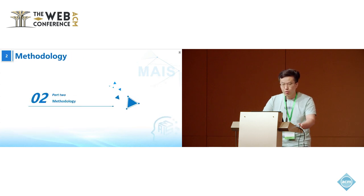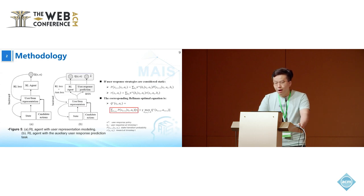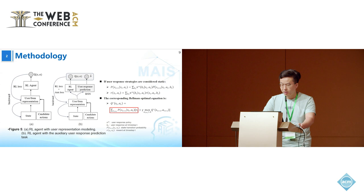Figure 5 illustrates two traditional reinforcement learning ad allocation methods: architecture of RL agent with user representation modeling, and RL agent with auxiliary user response prediction task. Both of them assume that the user's policy is static.